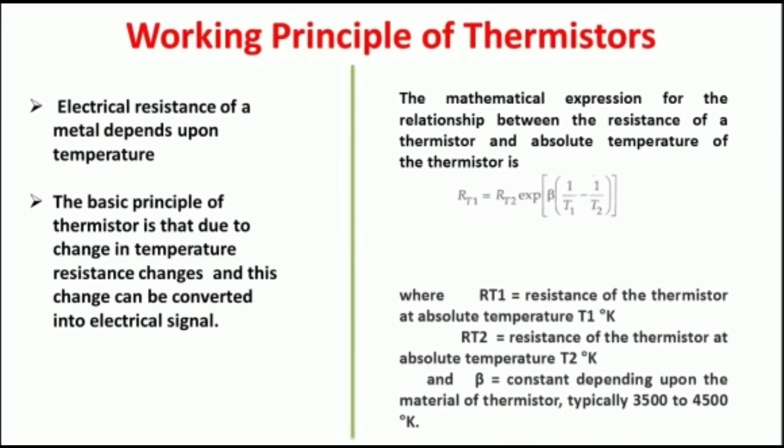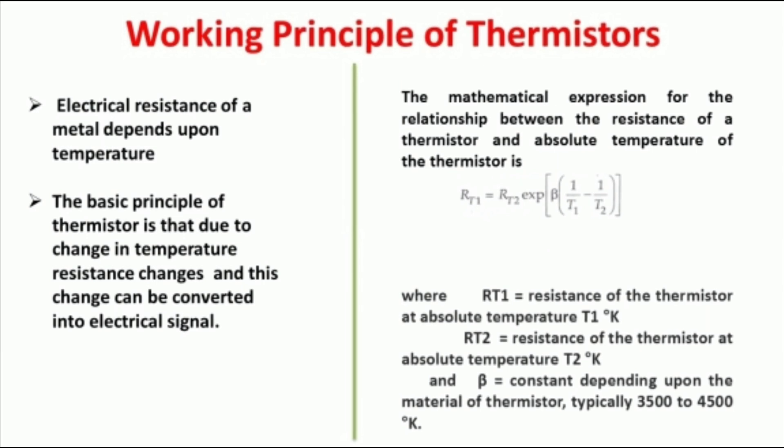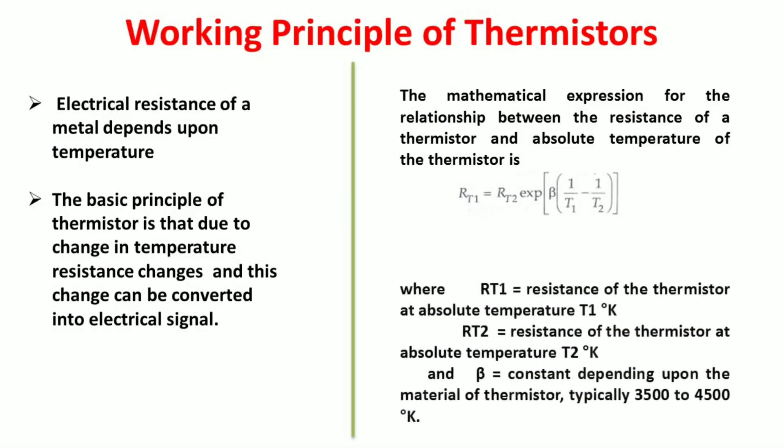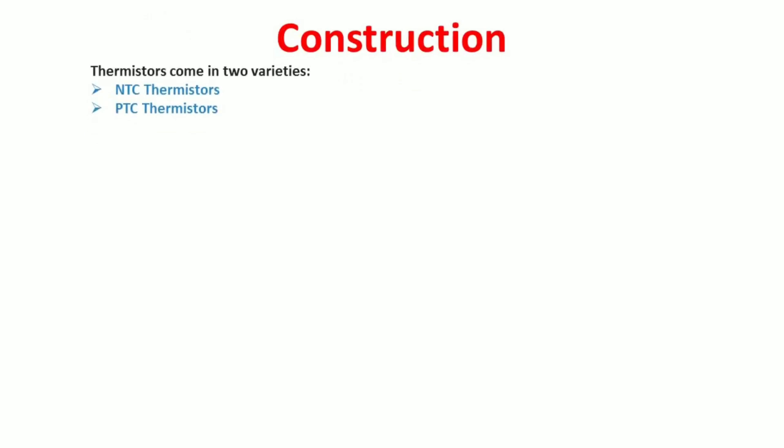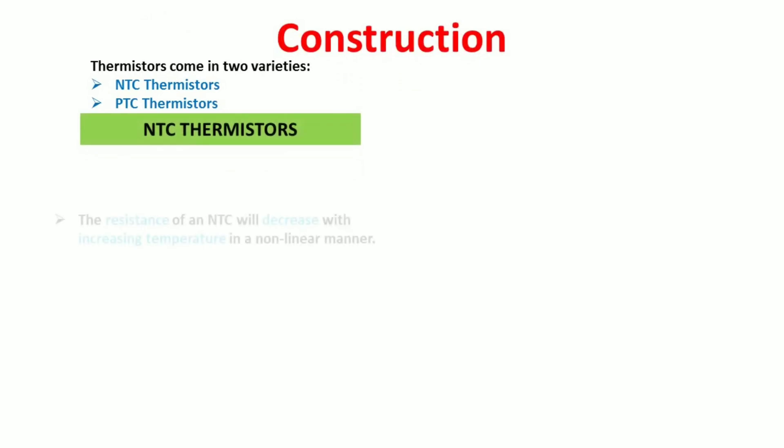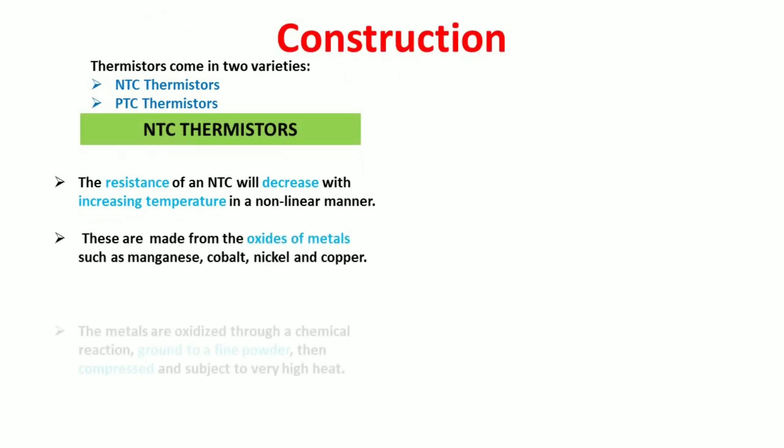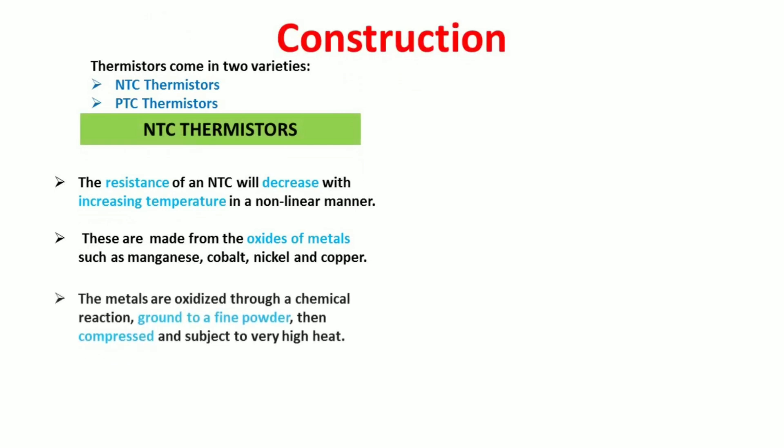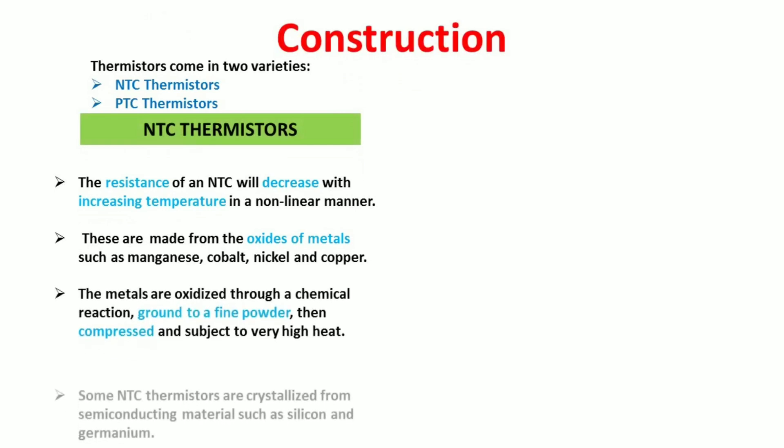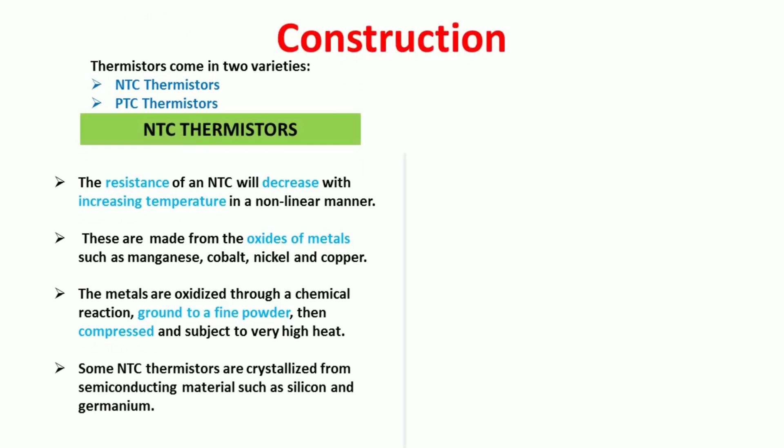Next is construction. Thermistors come in two varieties: NTC and PTC. NTC stands for negative temperature coefficient thermistor and PTC stands for positive temperature coefficient thermistor. NTC thermistors are made by oxidizing metals such as cobalt, nickel, manganese, etc., through a chemical reaction. Then they are grounded to a fine powder and then are compressed and subjected to high heat. The property of NTC thermistor is that the resistance of NTC decreases with increasing temperature.